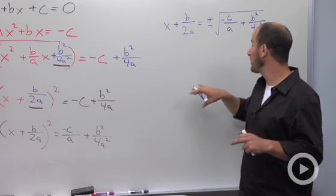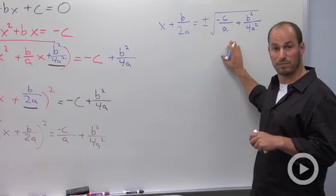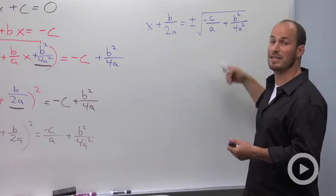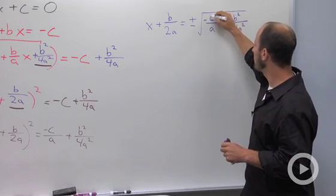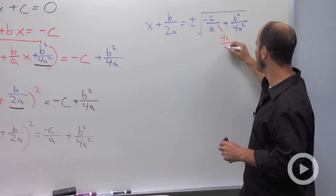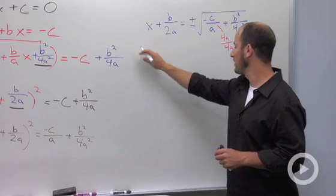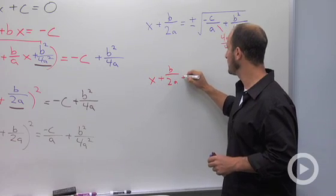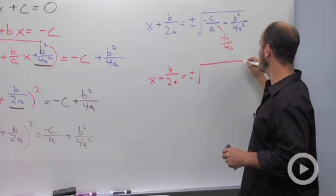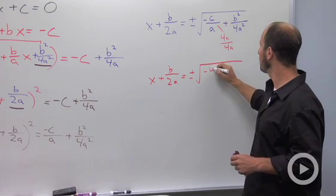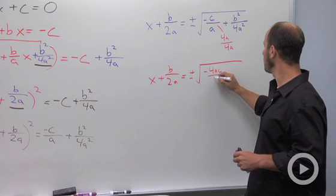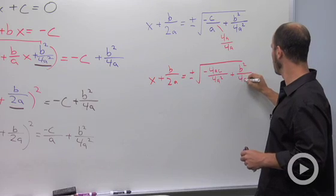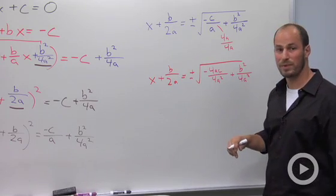Before I continue on, what I want to do is actually combine things in the square root. In order to combine things, we need a common denominator. So our common denominator in this case is 4a squared. So this term needs a 4a over 4a. The left side stays the same. x plus b over 2a is equal to plus or minus the square root of negative 4ac over 4a squared plus b squared over 4a squared. All right.